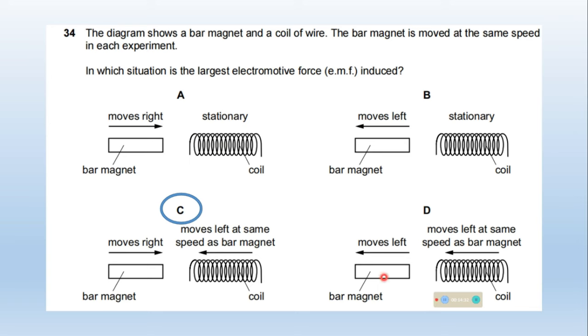In case D, the bar magnet and coil both move at the same speed and direction, so the relative motion is zero and induced EMF is zero. In case C, when both the coil and magnet move toward each other with speed V, the relative speed is twice. Clearly the induced EMF will be largest in case C.